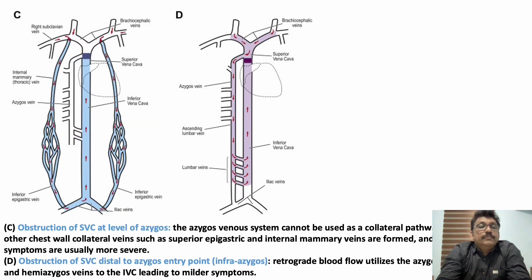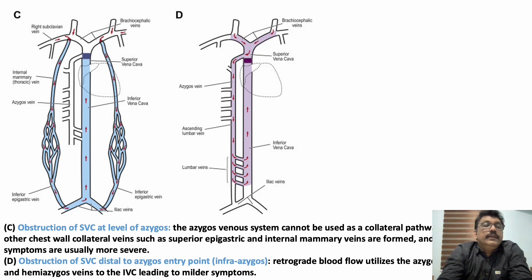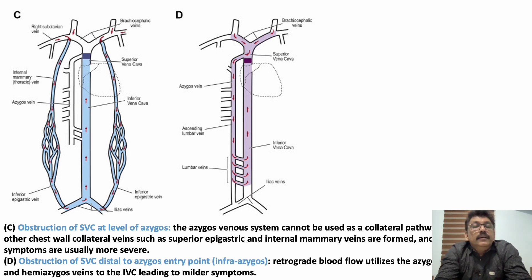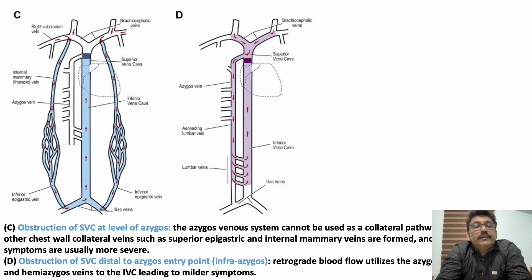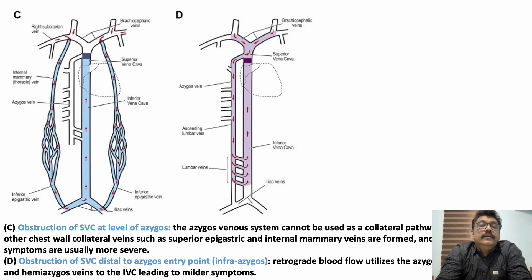The third pattern is obstruction of the SVC at the level of the azygos. When the azygos vein is obstructed, there will be no flow through it, but other engorged veins and large collaterals are visible all over the body from chest to abdomen, draining to the iliac vein. The fourth pattern is obstruction of the SVC distal to the azygos entry point — infra-azygos. Here, collaterals are well formed in the azygos vein and extend up to the lumbar veins, sometimes becoming very prominent.